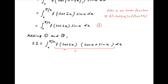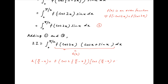Now let's represent the integrand here by h(x). Let's evaluate h of (pi upon 2 minus x). This is equal to f of cos of 2 times (pi upon 2 minus x), multiplied by cos of (pi upon 2 minus x) plus sin of (pi upon 2 minus x). Cos of (pi upon 2 minus x) is equal to sin x, and sin of (pi upon 2 minus x) is equal to cos x.